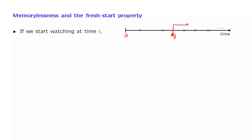Starting at that time, what will you see? Well, the original process was Poisson. This means that disjoint intervals in the original process are independent. Therefore, disjoint intervals in the process that you will be seeing will also be independent. Furthermore, during any little interval of length delta in the process that you see, we still have probability lambda times delta, approximately, of seeing an arrival. Therefore, what you see also satisfies the properties of a Poisson process and is itself a Poisson process.